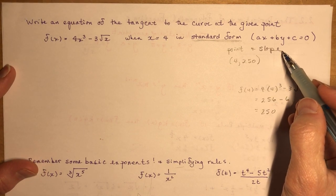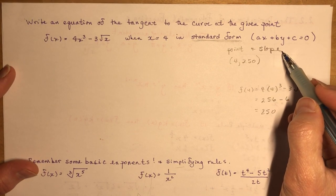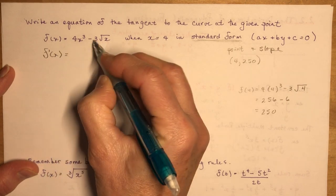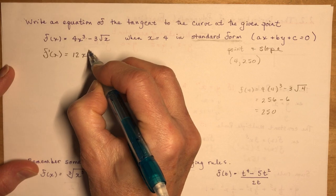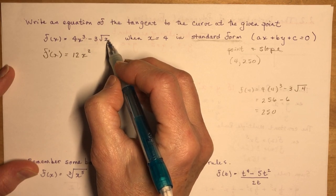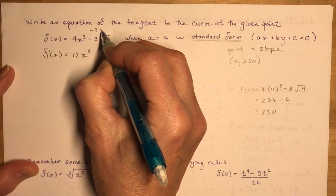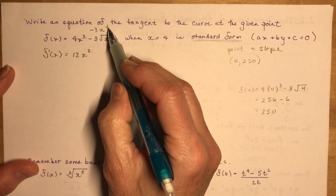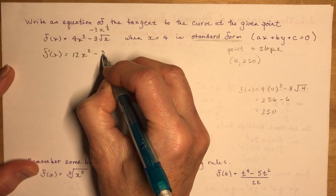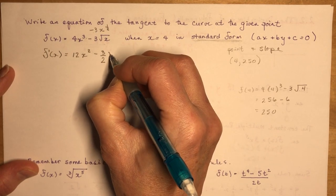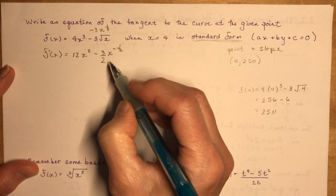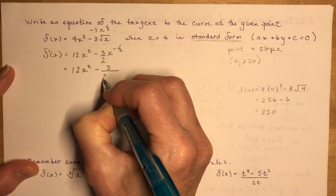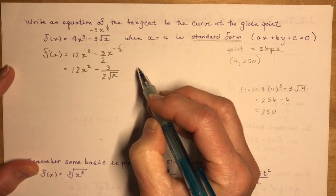To find the slope, I take the derivative. f(x) = 4x³ − 3√x. I should rewrite √x as x^(1/2) first. So f′(x) = 12x² − (3/2)x^(−1/2). Converting the negative exponent: f′(x) = 12x² − 3/(2√x).